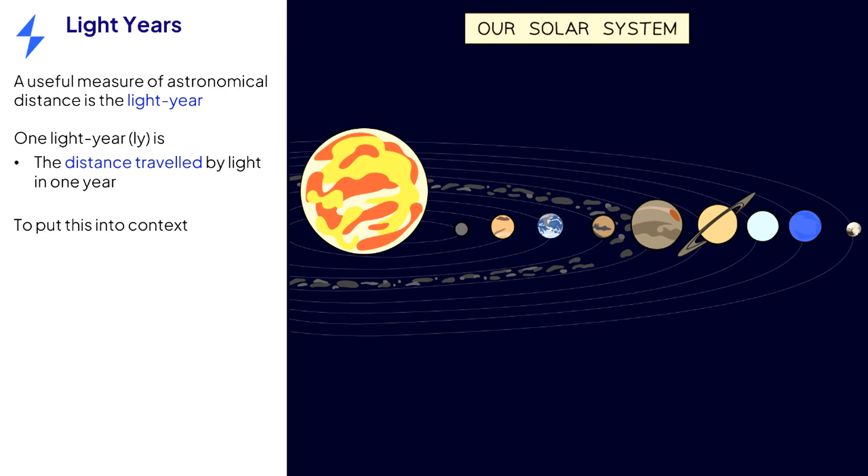To put this into context, light from the sun takes eight minutes to reach the Earth. We can say this distance is equal to eight light minutes.